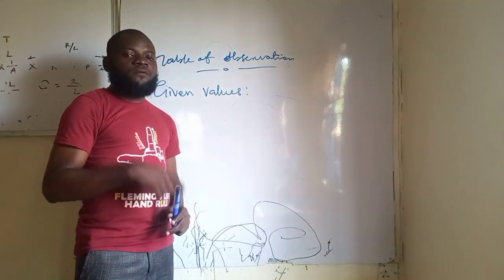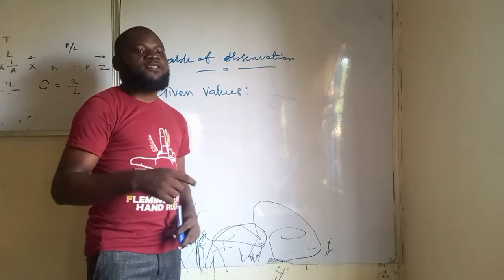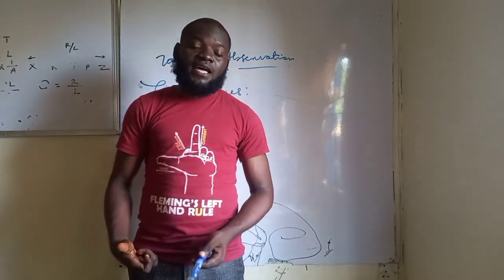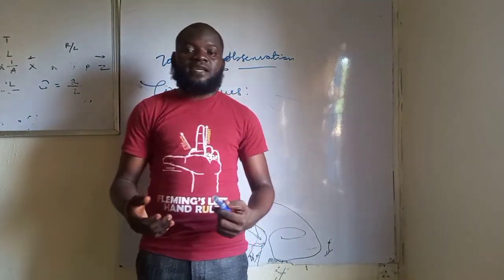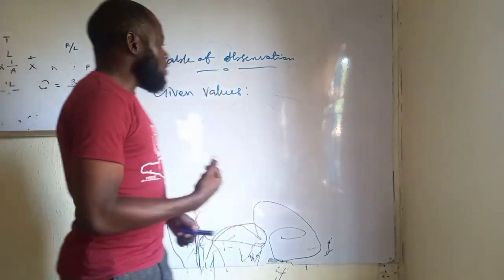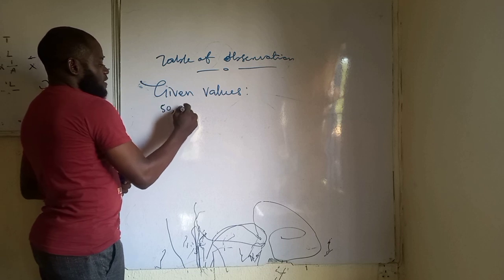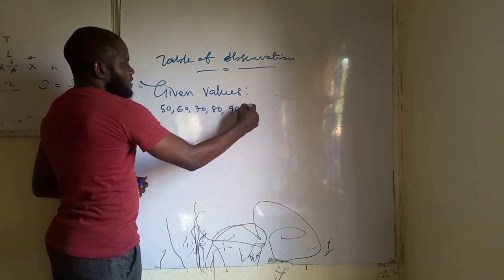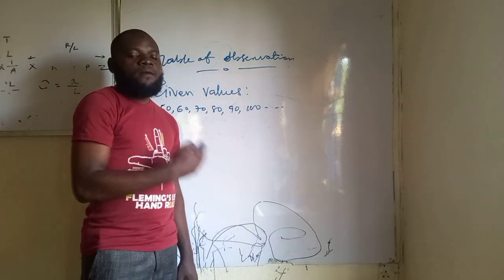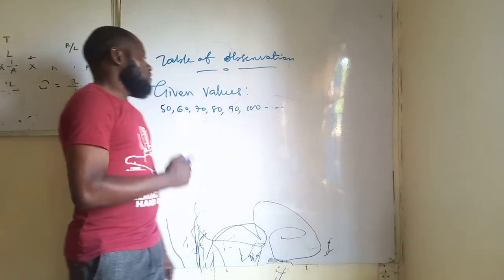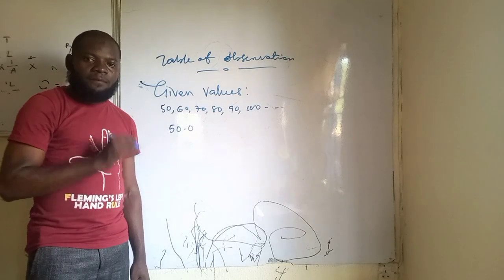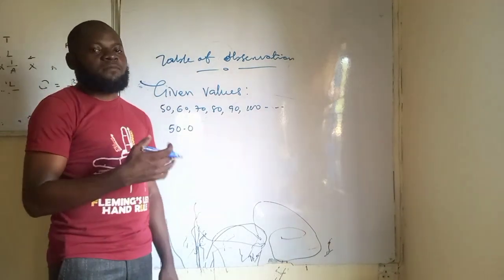For example, you are given a mass of 50 grams and asked to suspend the mass on a meter rule and adjust the meter rule until it's balanced horizontally. Record the balancing point and repeat the experiment for values of mass equal to 70, 80, 90, 100, 110. Those values — 50, 60, 70, 80, 90, 100 — are given in the question. This is what we refer to as a given value. Once it is a given value, you leave it in one decimal place, with an exemption.